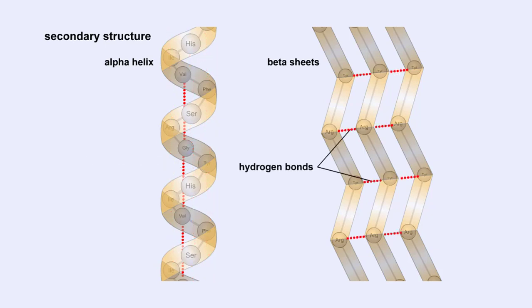A pleated sheet secondary structure is called a beta sheet. Beta sheets are formed by the looping of the polypeptide chain back on itself.